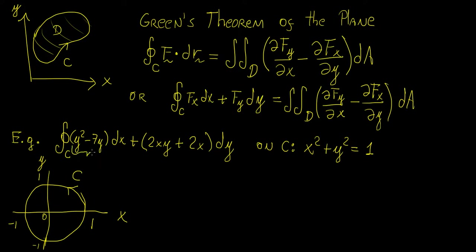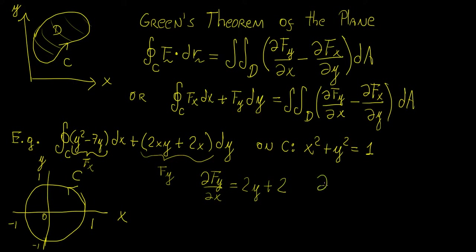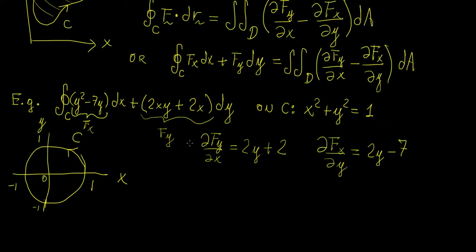If this is our function Fx and this is our function Fy, then according to Green's theorem we can write another function which is the difference of the two. We start with Fy and differentiate it with respect to x — that gives us 2y plus 2. Then we take the function Fx differentiated with respect to y, and that gives us 2y minus 7. So now, in order to evaluate this line integral, all we need to do is cast it in the form of a double integral.